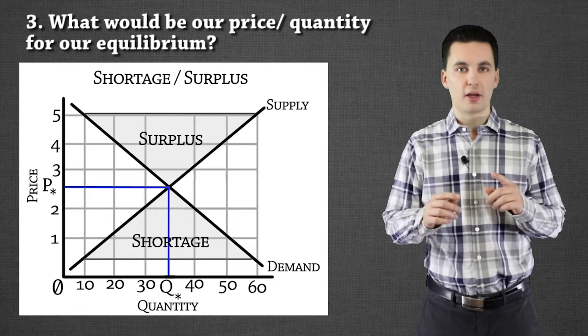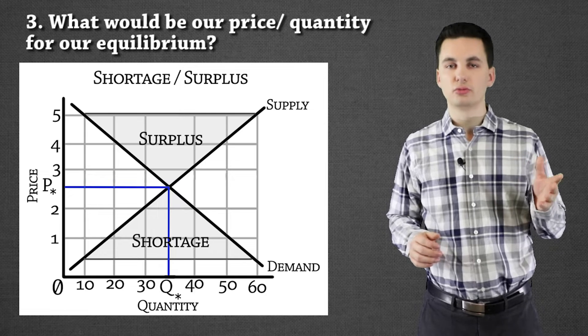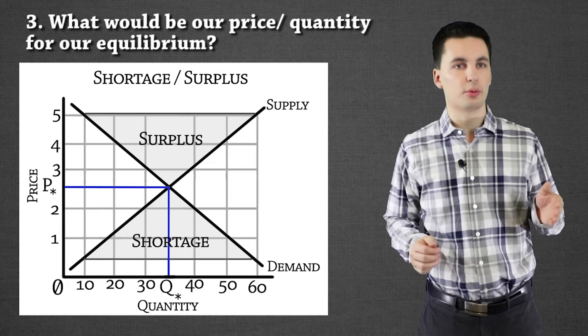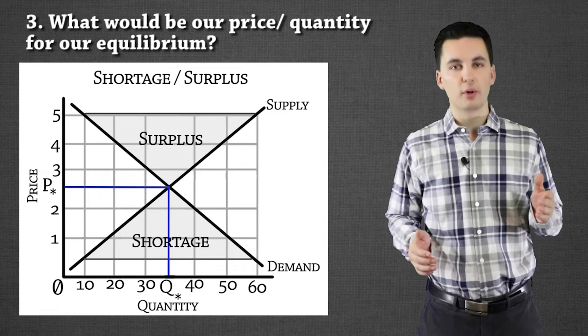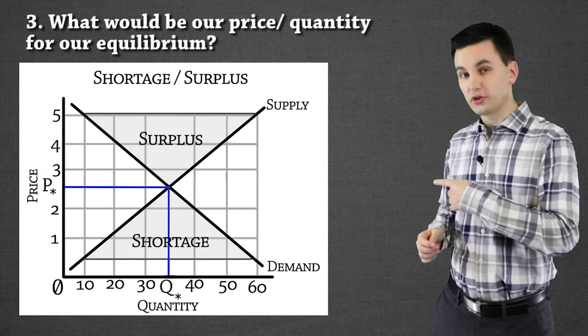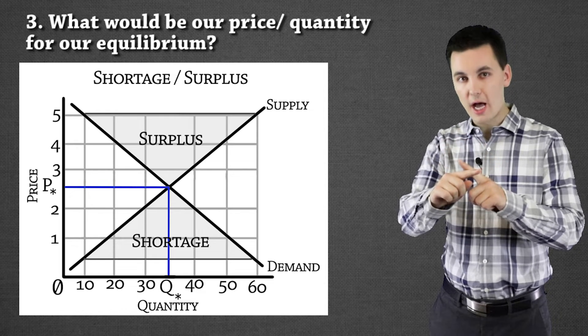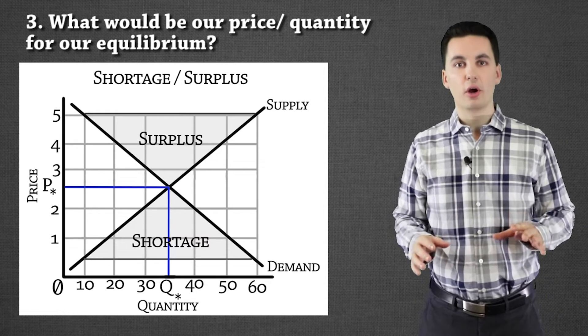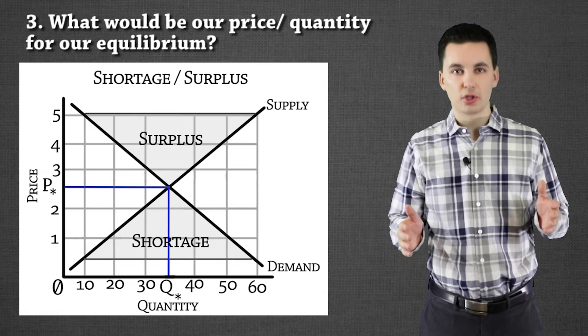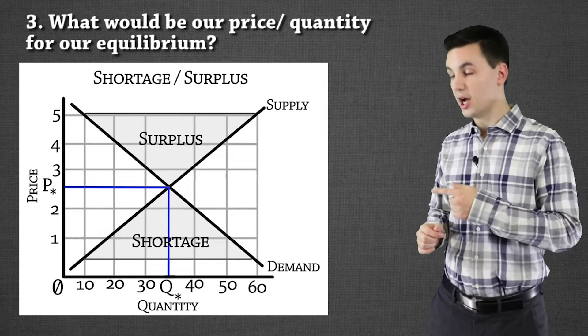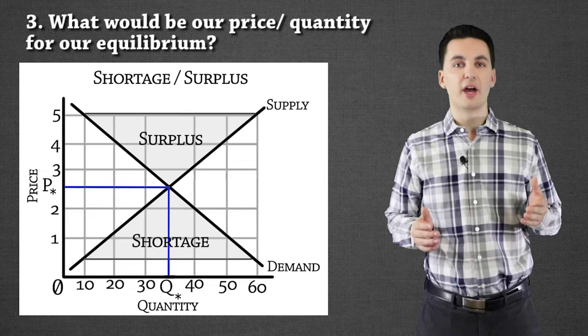The last question asks for the price and quantity at our equilibrium. We have to find that X marks the spot. We can see it's going to be about $2.50 — it's between $2 and $3. For quantity, it's going to be about 35, right between 30 and 40. That's the perfect area where supply and demand meet, so there's no surplus or shortage. Striving for equilibrium gives us the best outcome.